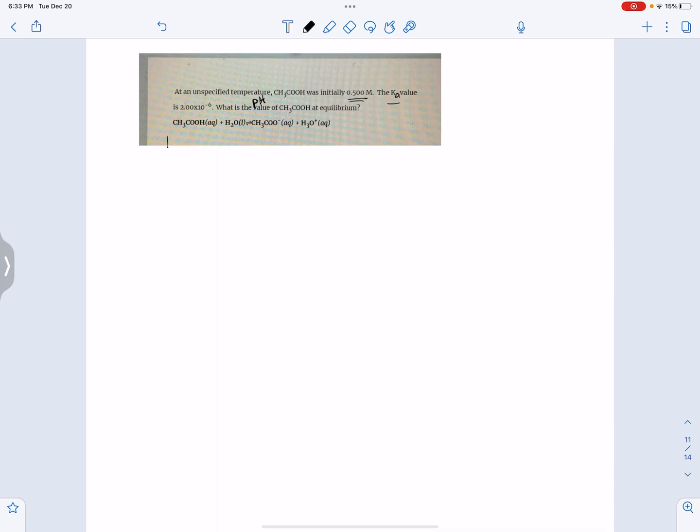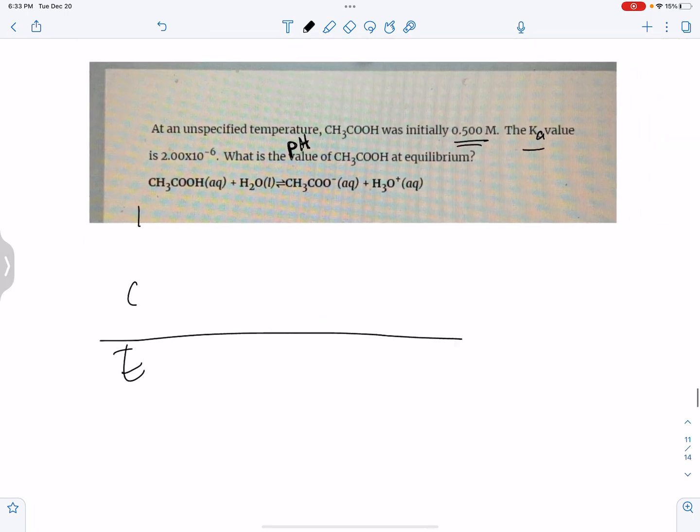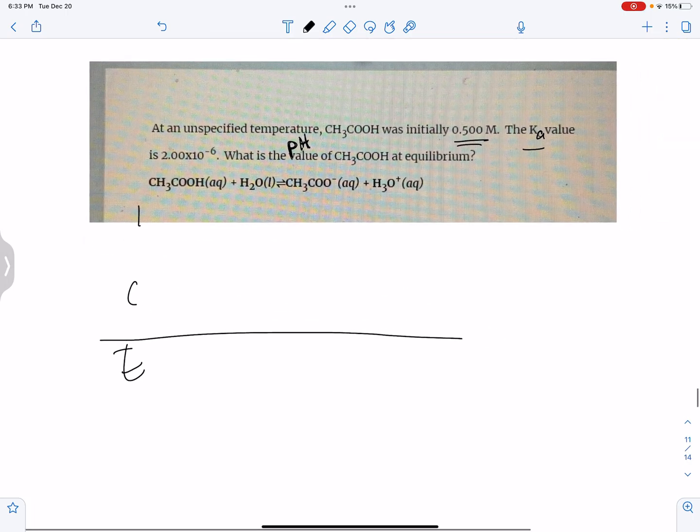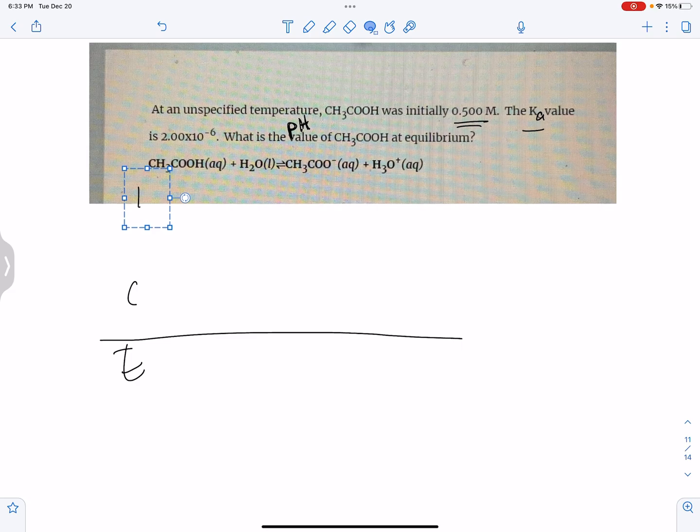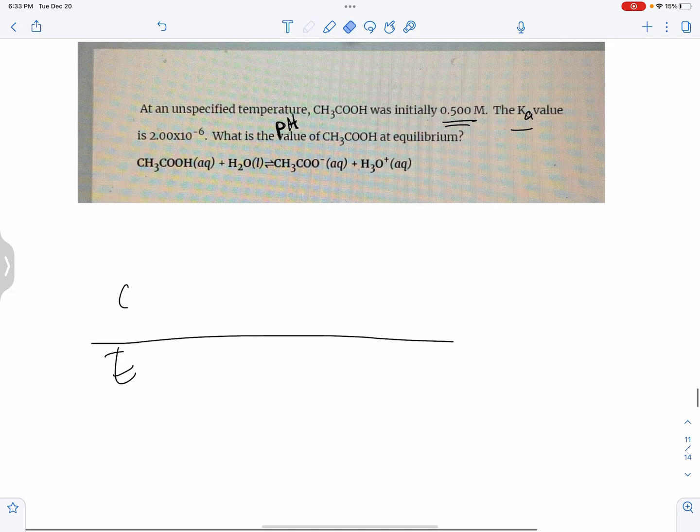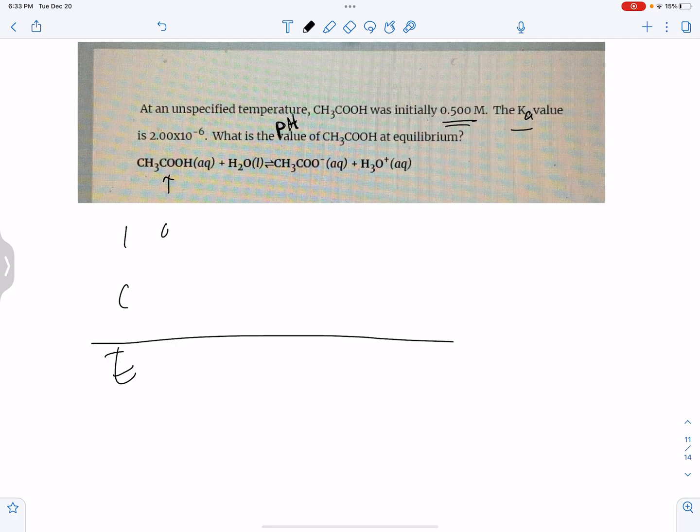It took me a second to find it. So initially, I'm going to put the I row. For this one right here the initial value is 0.500, and I don't have any of this one and I don't have any of this one initially.